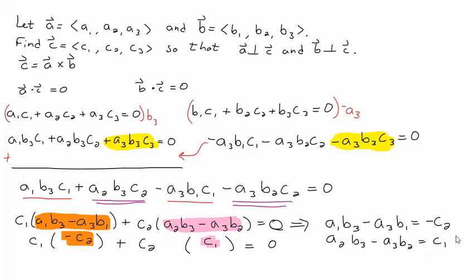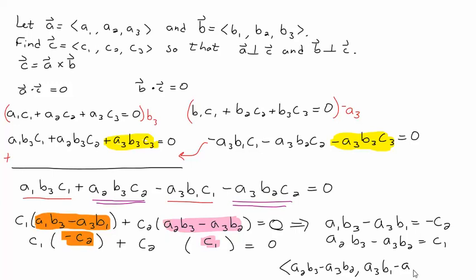We're almost there — we have found a formula for C1 and C2. So far we've got: C1 = A2·B3 − A3·B2. And C2 is the opposite of (A1·B3 − A3·B1), so switching the order: C2 = A3·B1 − A1·B3. Now all we have to do is figure out C3.